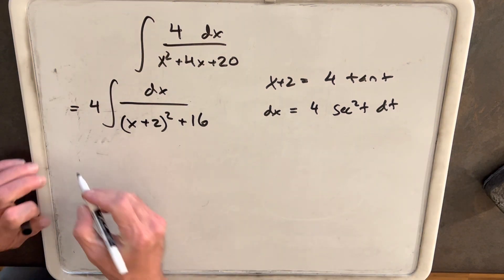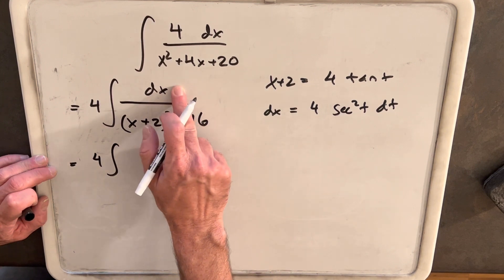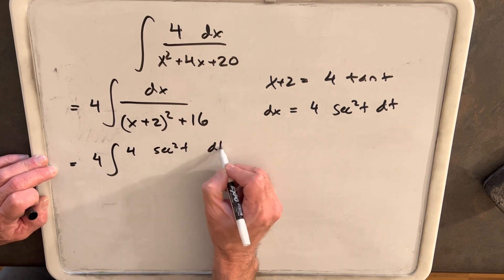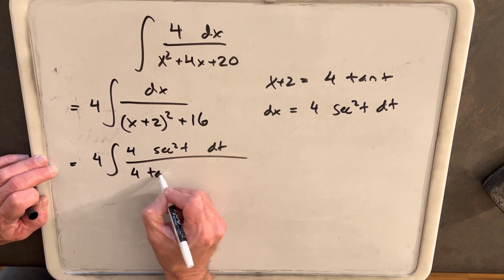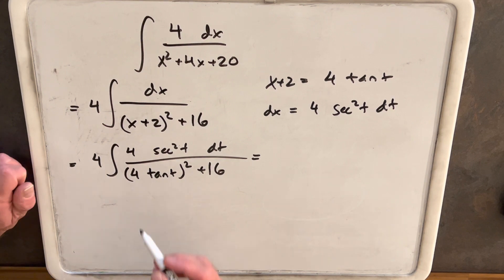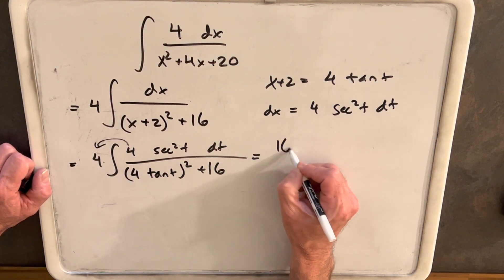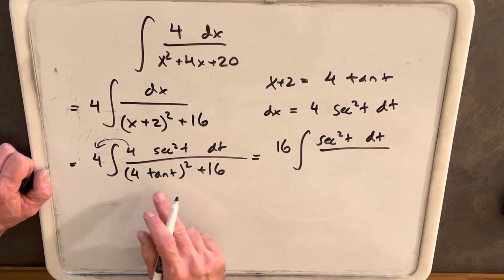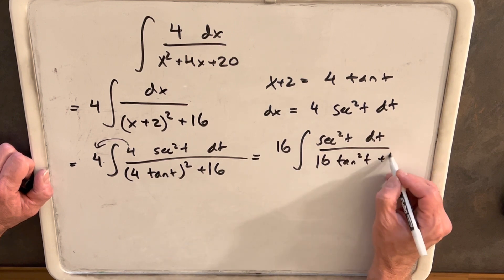Next we'll rewrite this and make our substitution. So we have our 4 out front, dx is just 4 secant squared t dt. Our x plus 2 is going to be 4 tan of t, but that's all squared plus 16. Let's just clean this up a little bit. We'll bring the 4 to the front and multiply times this 4, and we'll have 16 in front, secant squared t dt. Then squared, we'll have 16 tan squared of t plus 16.